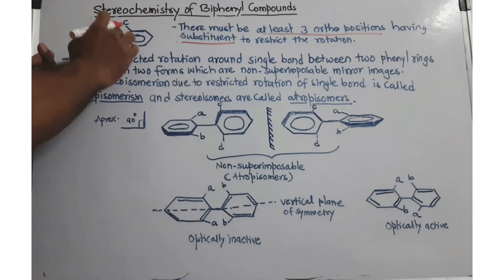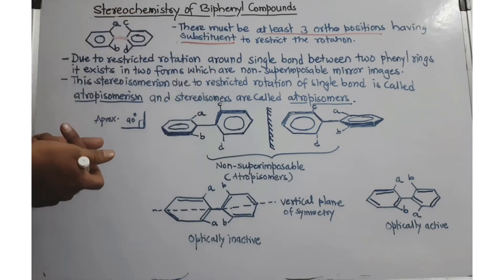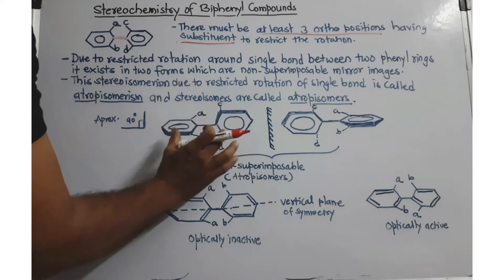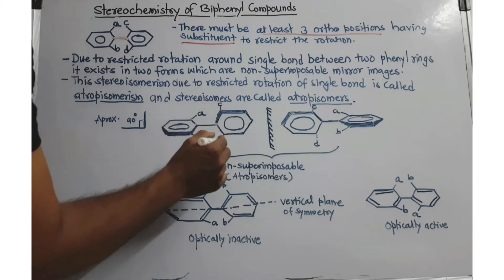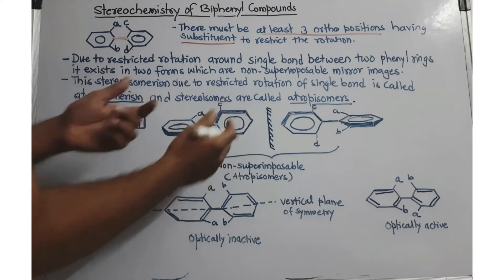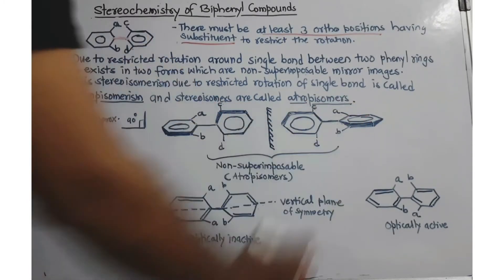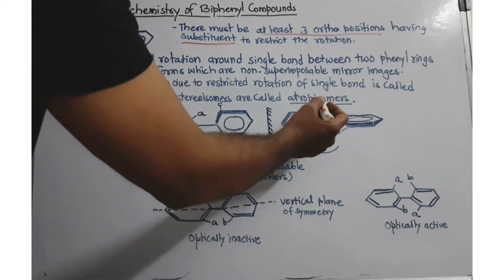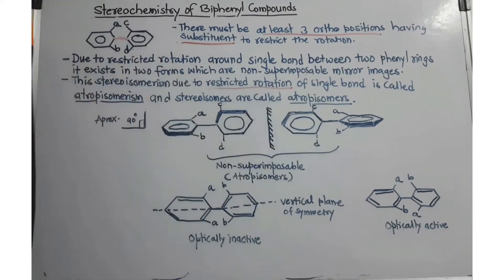If this compound forms a non-superimposable mirror image because of restricted rotation about the carbon-carbon single bond, those stereoisomers are called atropisomers and the phenomenon is called atropisomerism. These stereoisomers are formed because of restricted rotation — you can see there are four substituents at the ortho positions, and if they are non-superimposable mirror images, these two are called enantiomers. Remember: restricted rotation of a single bond.